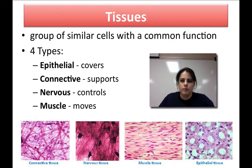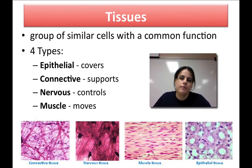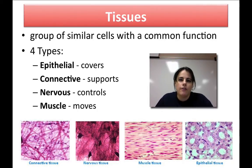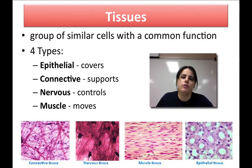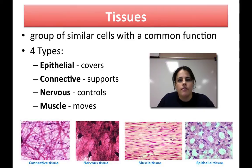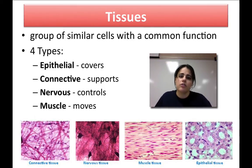Tissue is simply a group of similar cells with some sort of a common function. In all organisms, there are four major types of tissue. The first type is called epithelial tissue, and its main purpose is it covers body surfaces. We have connective tissue, which its main purpose is to hold the body together and give some support. We have nervous tissue, which controls everything that's happening in the body. And then we have muscle tissue, which obviously allows the body to move.